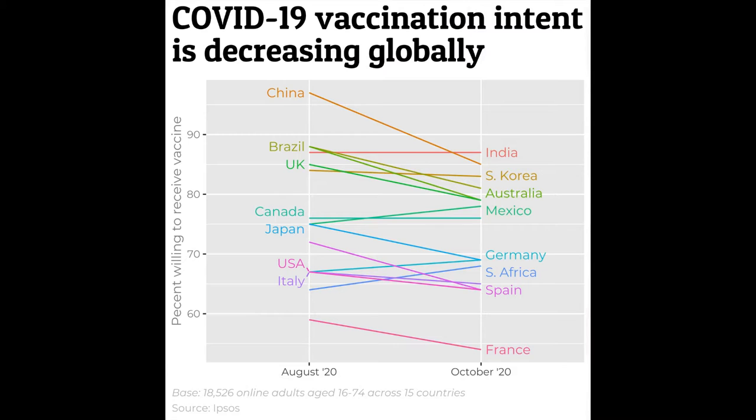We're going to use geom_label, which will put a nice border and background around each of those country names, but then we'll also use functions from the ggrepel package that will allow us to automatically separate those names so they don't overlap with each other, giving us a really nice look and getting us really close to having a slope plot that we're not too afraid to show out in public.